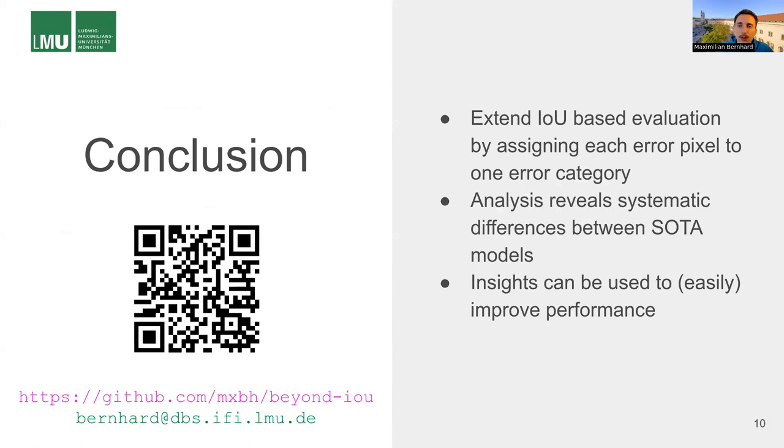So to conclude, in this work we proposed an extension for the IoU-based evaluation of semantic segmentation models, which consists of three new error metrics that are intuitive and allow for a better understanding of semantic segmentation models. In our analysis of state-of-the-art models, we have seen that there are systematic differences in the models. And it turns out that we actually can derive solutions how to improve semantic segmentation models from these insights. So this emphasizes the value of our error metrics.